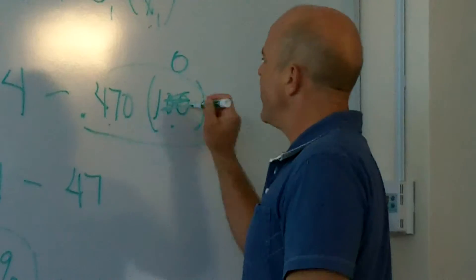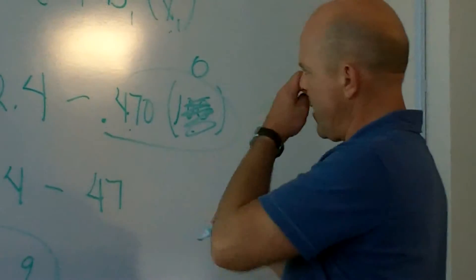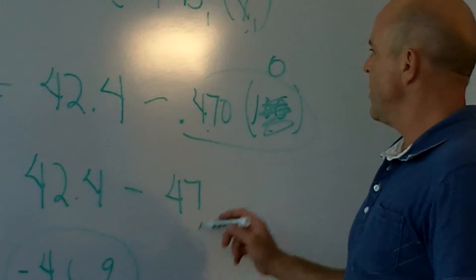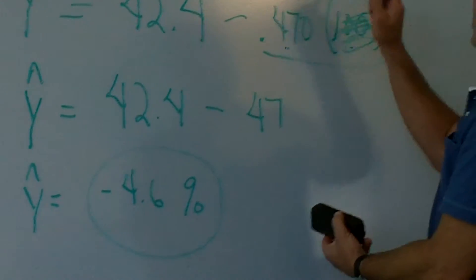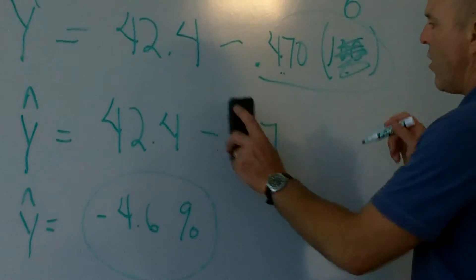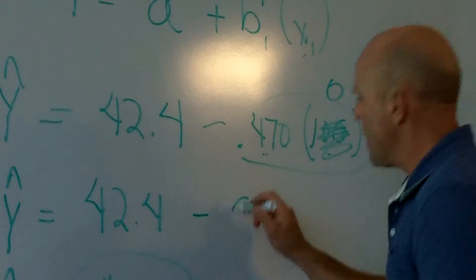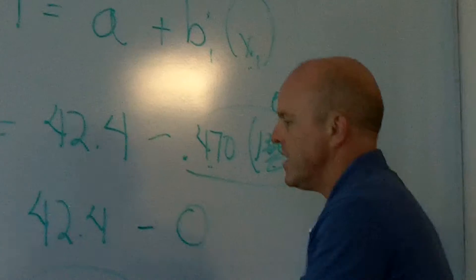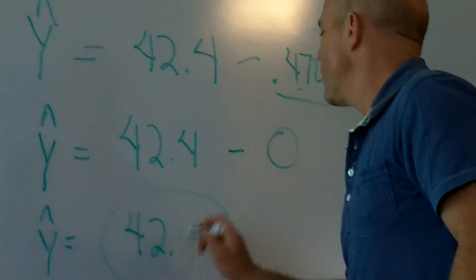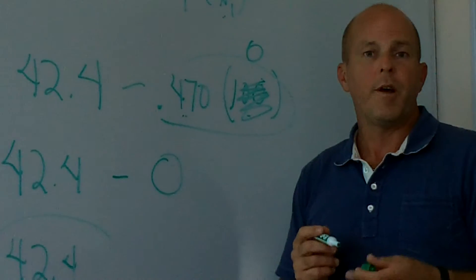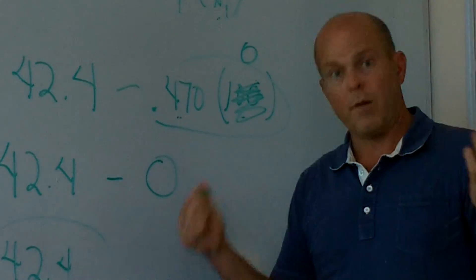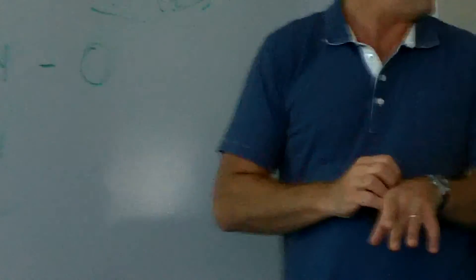We could plug in a zero here. And if we plugged in a zero, this would mean that 0.470 times zero is, of course, zero. So, this would be 42.4 minus zero, which is easy enough to do, 42.4. So, you can plug in here any old number that is a reasonable number value for the dependent variable.